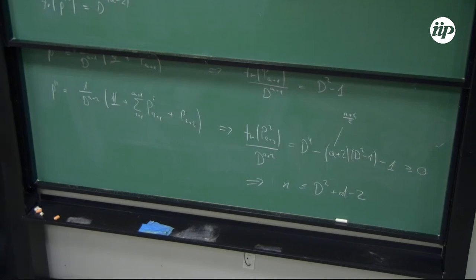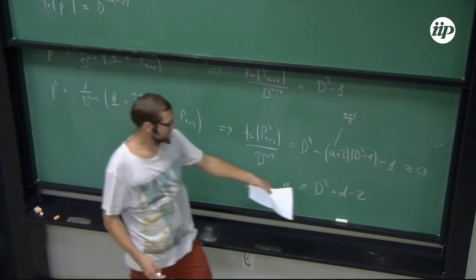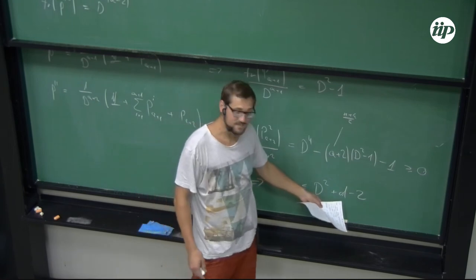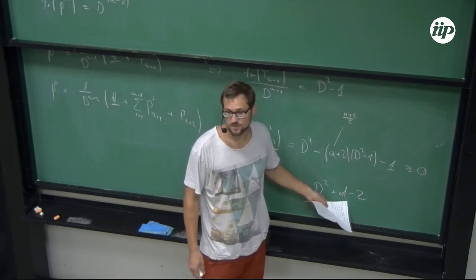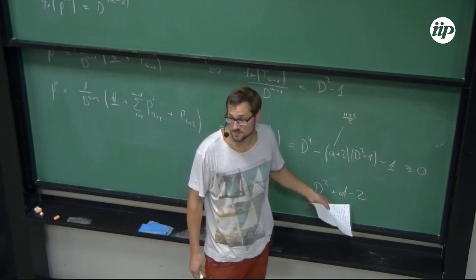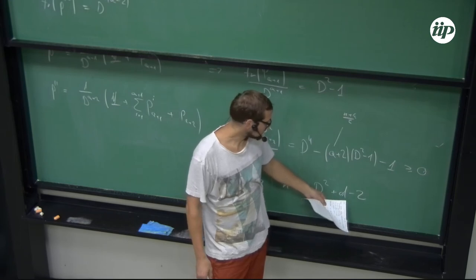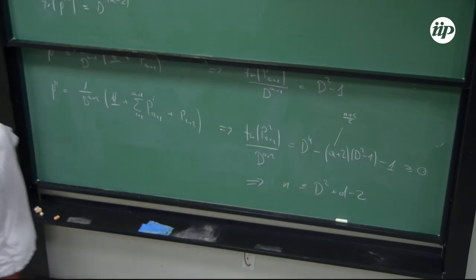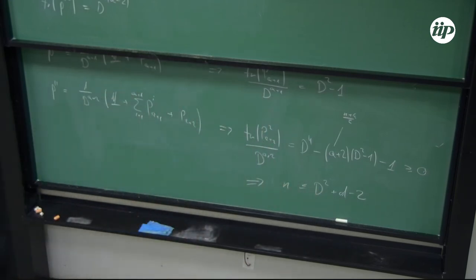This bound is weaker than the conjecture since we have plus D rather than plus 1, but it is a correct bound for all quantum MDS codes. Notably, this is the first proof for d equals 3 codes, representing a baby step toward proving the full conjecture.